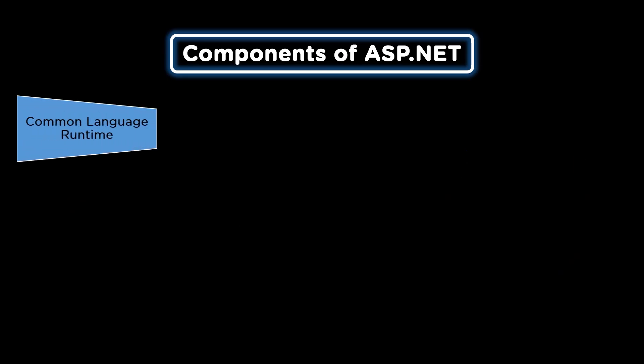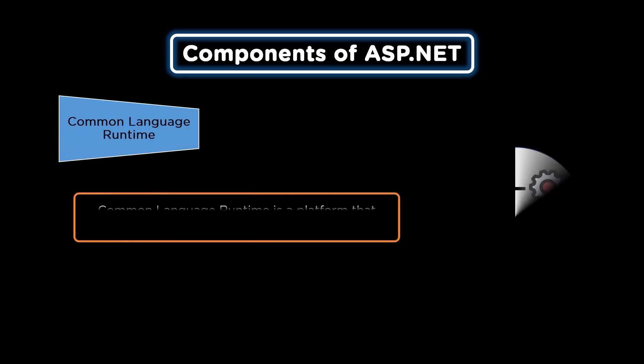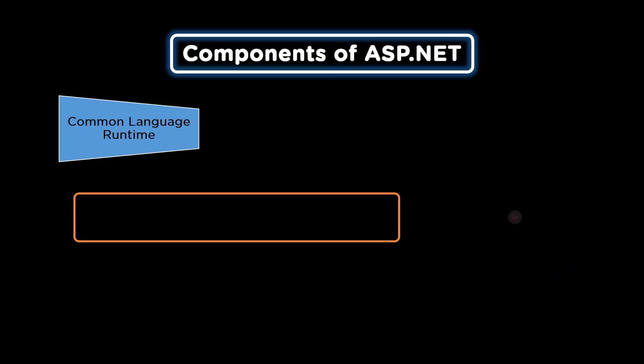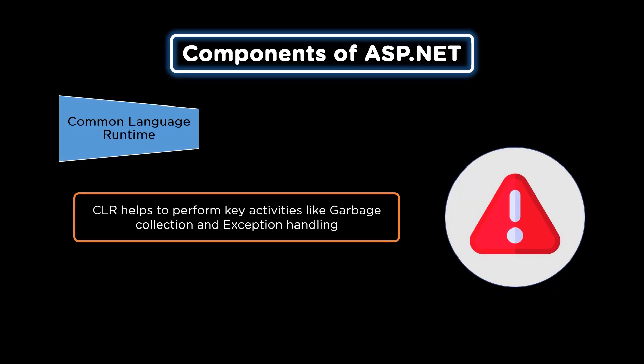The third and last integral component is the Common Language Runtime. Common Language Runtime is a platform used to execute the programs. It mainly helps to execute .NET programs and is also used for performing key activities like garbage collection and exception handling. The code that the Common Language Runtime directly manages is called the managed code.